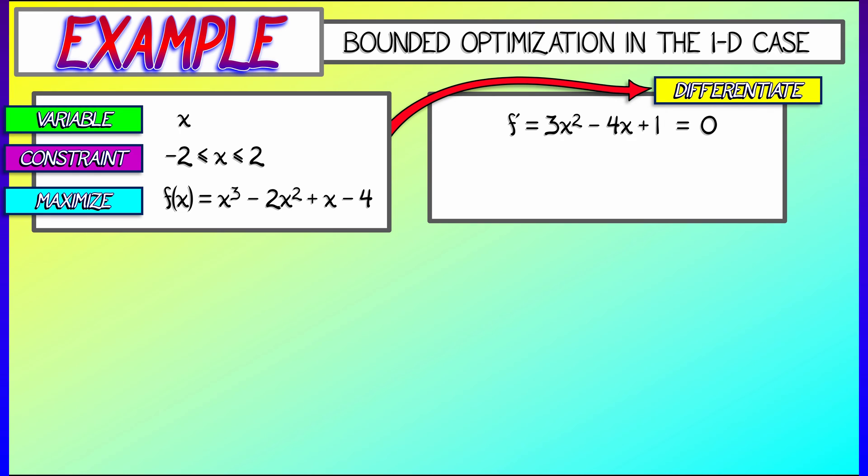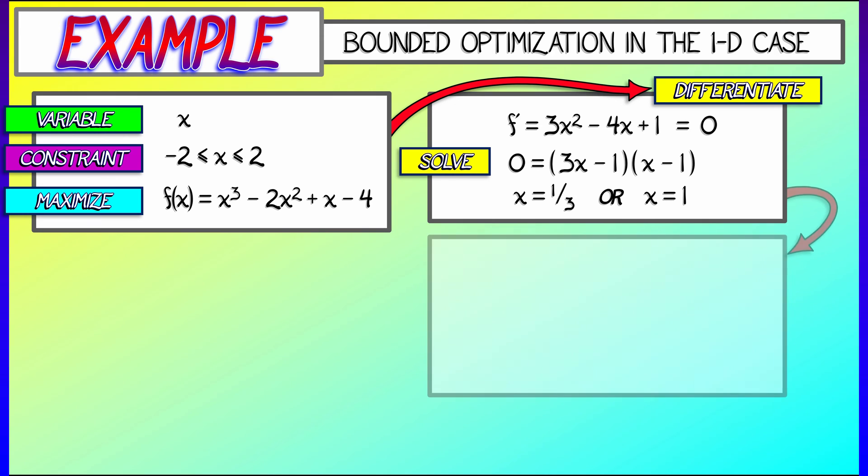f prime is 3x squared minus 4x plus 1. Set that equal to 0. We can factor that really easily into 3x minus 1 and x minus 1. Solving for 0 gives us values of x equal to 1/3 or x equals positive 1. There we go. Some very nice critical points.